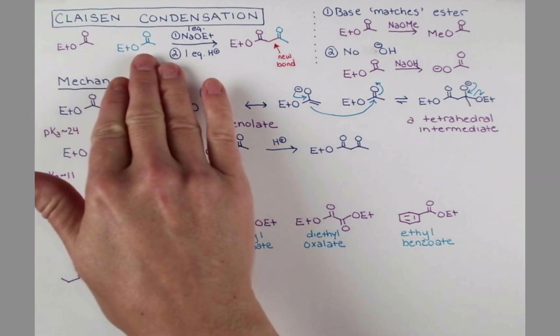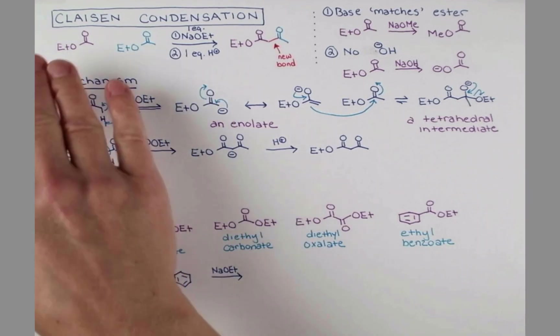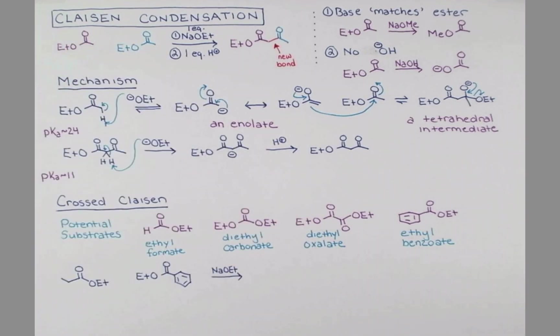This substrate is actually quite sterically hindered. And we saw in this reaction that we can have a Claisen reaction of one substrate with itself. So it's actually more likely that this will enolize and then react with an unreacted molecule of itself, since this is harder to attack. So what we need to do is use an excess of this compound. So as soon as some of this enolizes, it finds our ethyl benzoate and does the crossed Claisen.